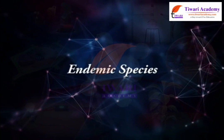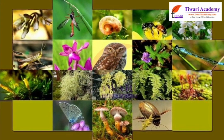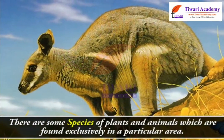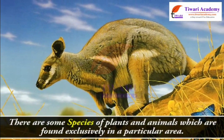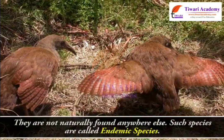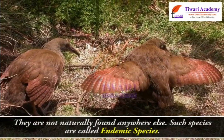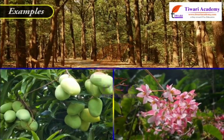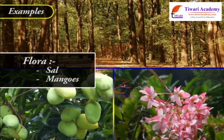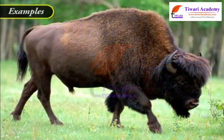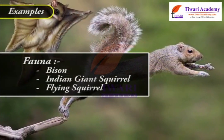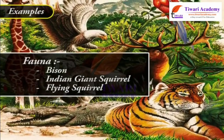Endemic species are those species of plants and animals found exclusively in a particular area and not naturally found anywhere else. Examples include sal and mango, which are endemic flora of the Panchmari biosphere reserve. Bison, Indian giant squirrel, and flying squirrel are endemic fauna of this area.